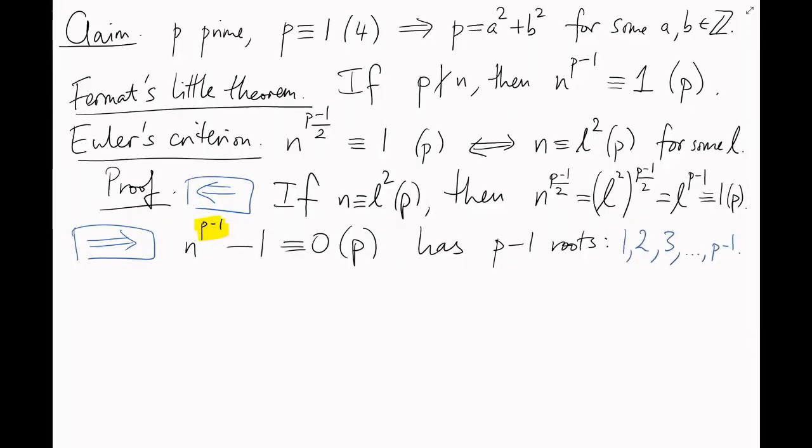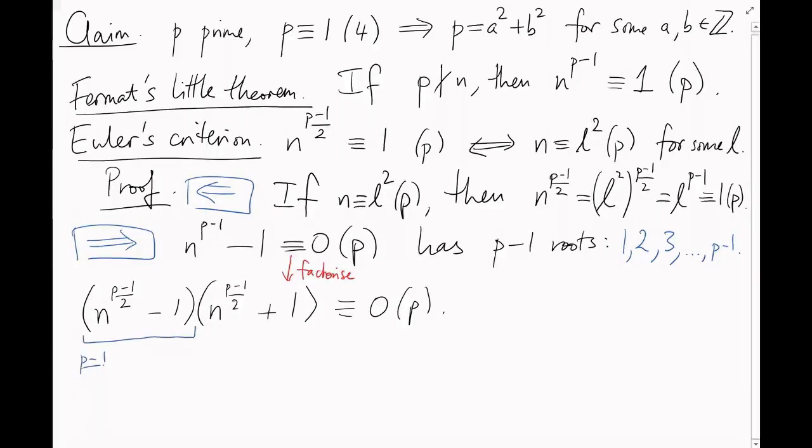And this polynomial has p-1 roots. But this polynomial on the left-hand side is also a difference of two squares. So we can factorize it as (n to the (p-1)/2 minus 1) times (n to the (p-1)/2 plus 1) equals 0 mod p. So this polynomial must have (p-1)/2 roots, and this polynomial must have (p-1)/2 roots. We've just shown that the squares satisfy the first polynomial, so if there are (p-1)/2 of them, then all the non-squares must satisfy the second polynomial.